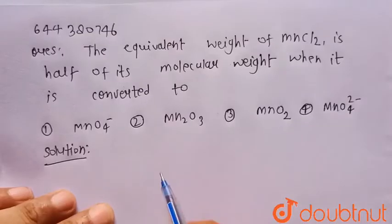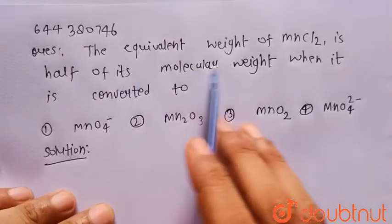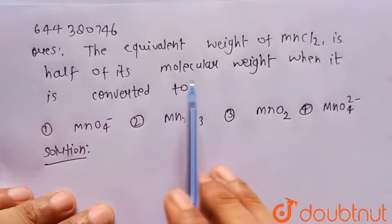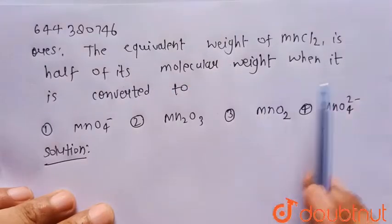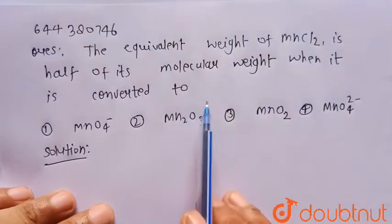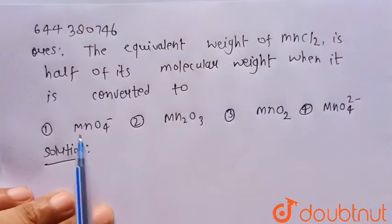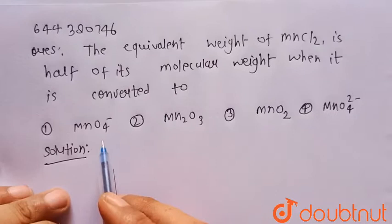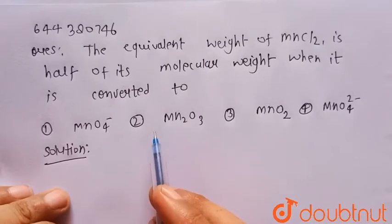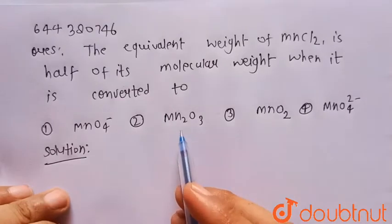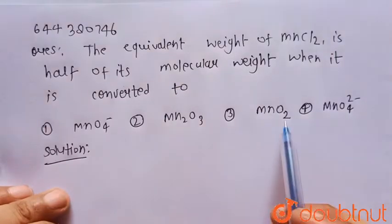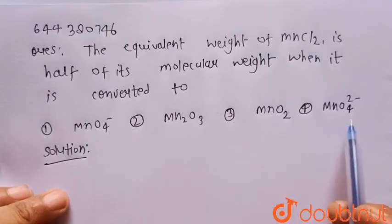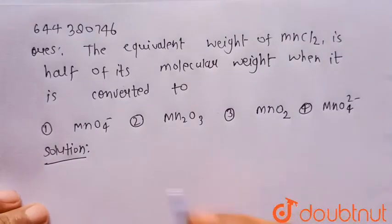Now everyone consider the given question: The equivalent weight of MnCl2 is half of its molecular weight when it is converted to — with four options: first MnO4⁻, second Mn2O3, third MnO2, and fourth MnO4²⁻.